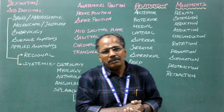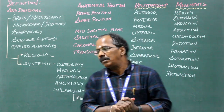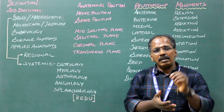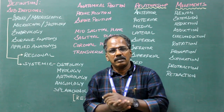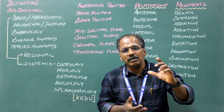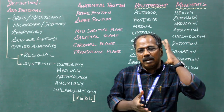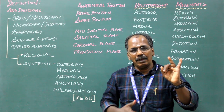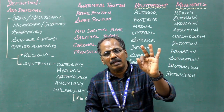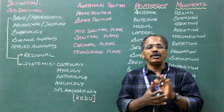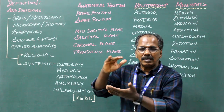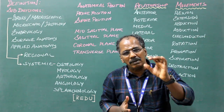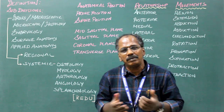Anatomy is divided into regional anatomy and systemic anatomy. In regional anatomy, the body is divided into various regions: head and neck and brain; trunk which includes thorax, abdomen, and pelvis; and limbs or extremities which include upper and lower limbs. For example, dental students will concentrate mainly on the head, neck, and brain region.